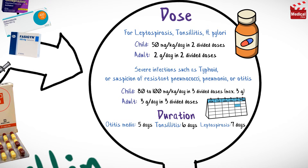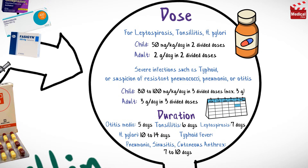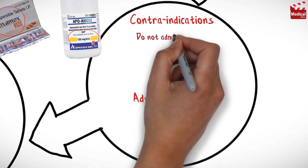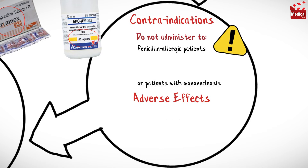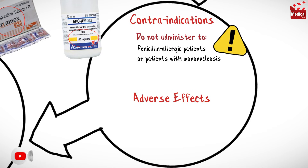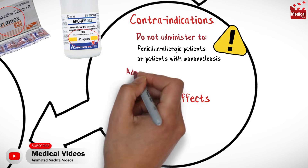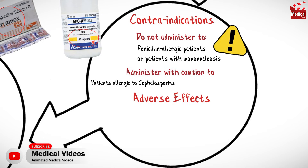Duration of treatment: otitis media 5 days, tonsillitis 6 days, leptospirosis 7 days, pneumonia, sinusitis, and cutaneous anthrax 7 to 10 days, Helicobacter pylori infection 10 to 14 days, and for typhoid fever 14 days.